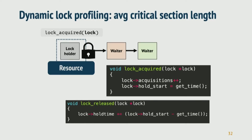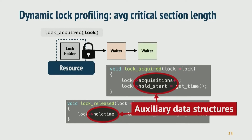When a thread acquires a lock, the lock_acquired API is triggered. Within the API, users write their own code to gather statistics. In this simplistic example, we count the number of lock acquisitions and store a timestamp in hold_start. When a thread is about to release a lock, lock_release is triggered, and within this release API, we calculate the length of the critical section and get the cumulative lock hold time. Synchrod allows users to add auxiliary data structures, which are allocated dynamically when a policy is installed and freed when the policy is uninstalled. Therefore, having Synchrod does not introduce any memory overhead when there is no policy installed.